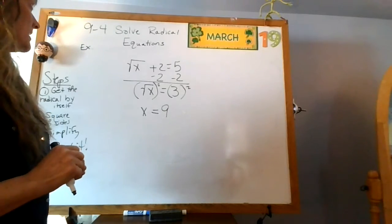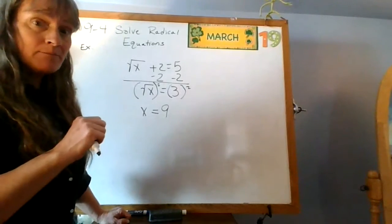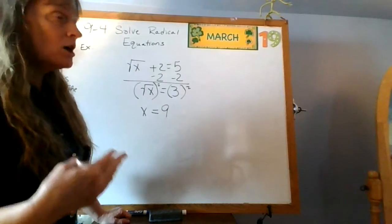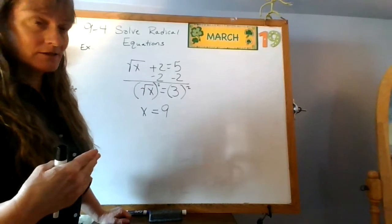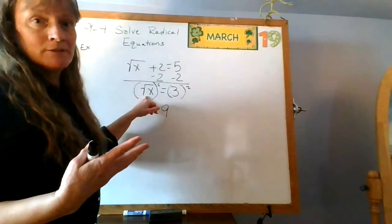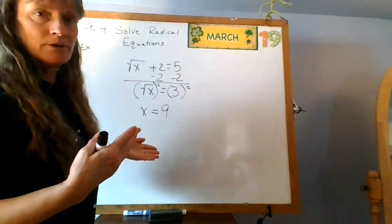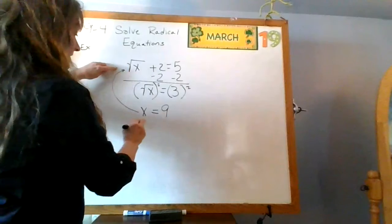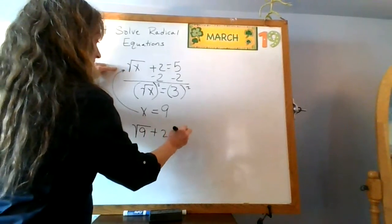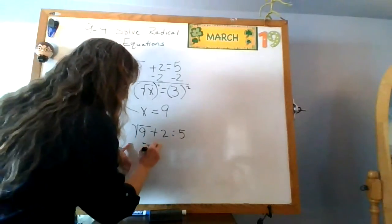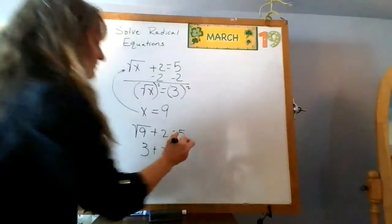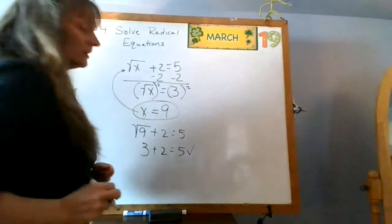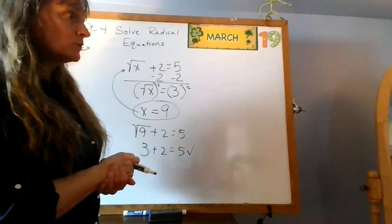This particular step requires you to check it, and here's why: in a few minutes we'll see that some of these do not have an actual answer — you get an answer that looks good, but when you put it back in, you find out it doesn't work. For instance, if this had been negative nine, you can't take a square root of a negative number. So let's go back and put it in: the square root of nine plus two equals five. Square root of nine is three; three plus two equals five — five equals five. Check! Circle it; x equals nine.